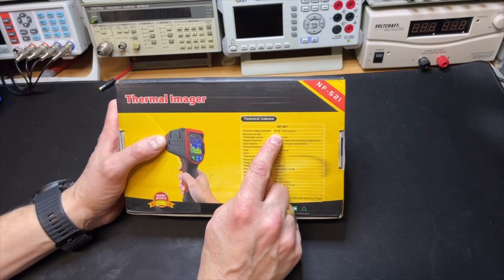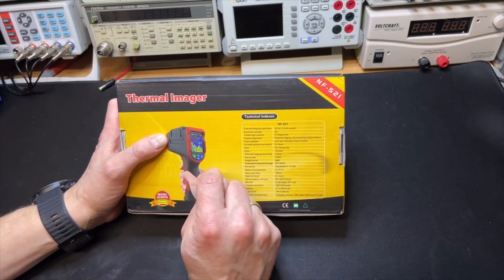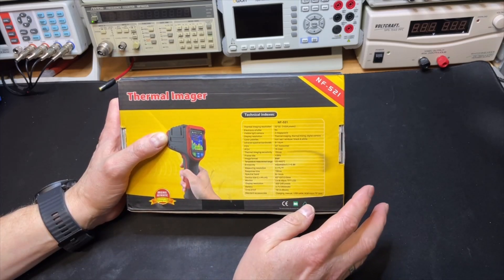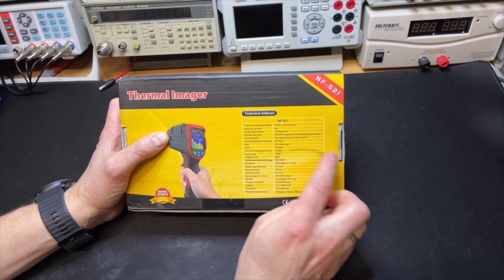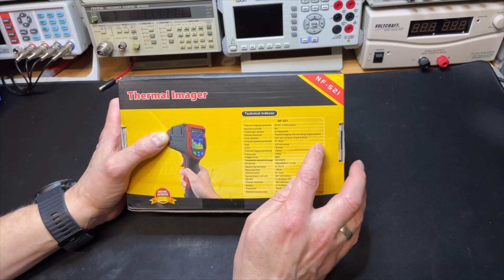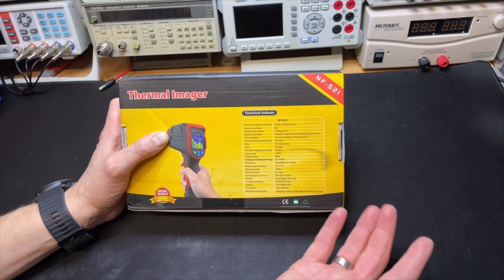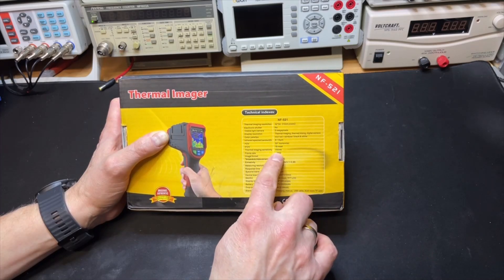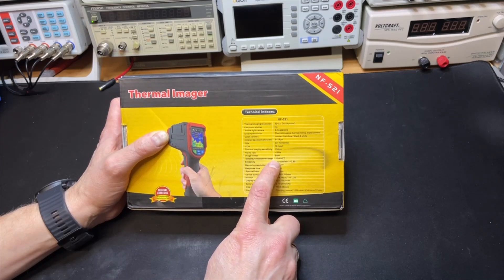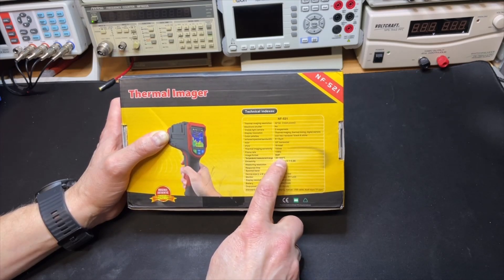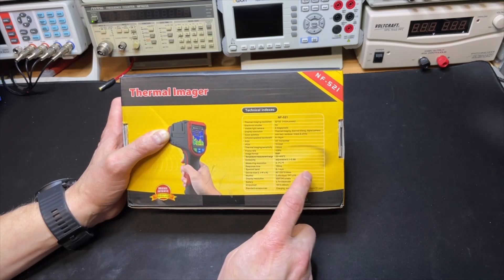Specifications right here. The chip is 32 by 32 for imaging and I think it is one megapixel for the normal, two megapixels for the visual camera. Different types of images - rainbow, red, or black and white. It can store pictures in bitmap. It can do temperatures minus 20 to up to 400 Celsius.